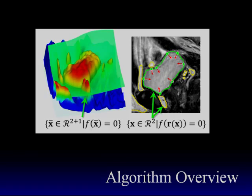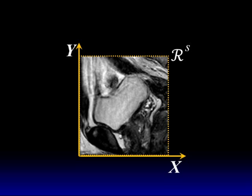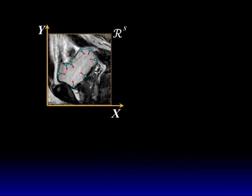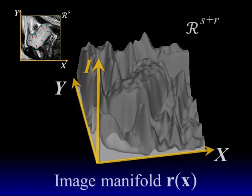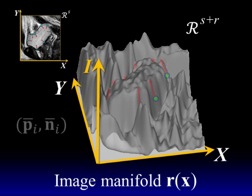We explain our segmentation algorithm with this 2D grayscale image. The user specifies 8 constraint points with normals. We construct an image manifold in the spatial range joint domain by considering image intensity as height.